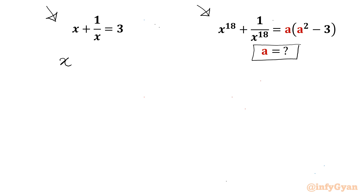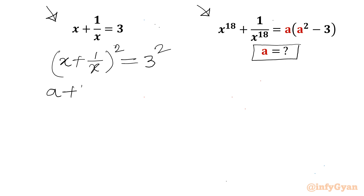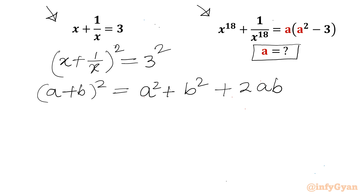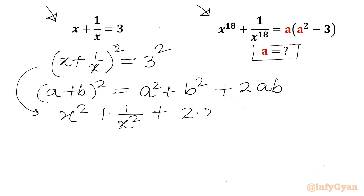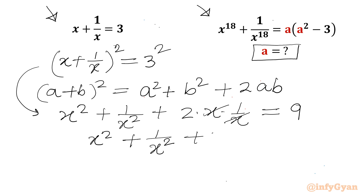I will consider squaring both sides of the given equation x plus 1 over x equal to 3. Now I can write the a plus b whole square formula, which is a squared plus b squared plus twice ab. Applying this, I can write x squared plus 1 over x squared plus 2 times x times 1 over x, which will be equal to 9. Now x and x will cancel.